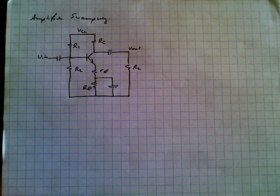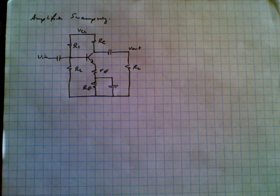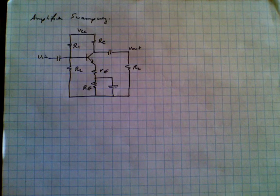Amplifier swamping is a method of controlling the gain by means of external components so it's not entirely dependent upon the gain of the transistor.